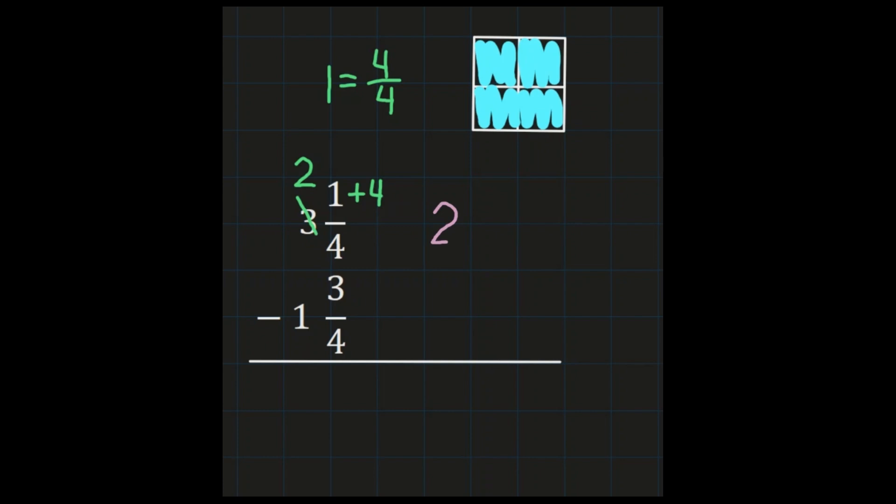So now I have a whole number of 2. I have 1 plus the 4/4 gives me 5/4. So now I have 2 and 5/4, and I don't need to do anything to the bottom number. So we're going to be subtracting the 1 and 3/4.